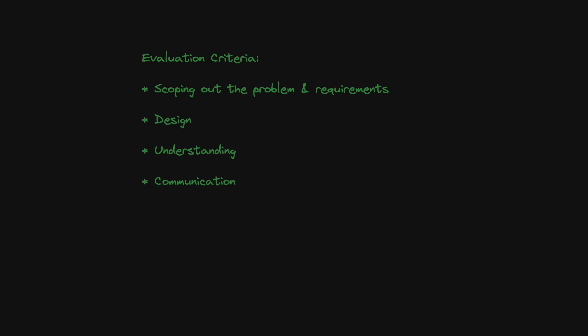The evaluation criteria is actually very similar to a system design interview. The first part is how well do you gather the requirements for the system and translate these into the components needed, accounting for the constraints provided. This is usually a back and forth with the interviewer where you'll understand the functional and non-functional requirements and take these into account when designing the system. Next is the design itself — did you design it in a way that met all the requirements? Did you make sensible decisions when choosing components? And were you able to tie your decisions back to how the user will use and experience your product?